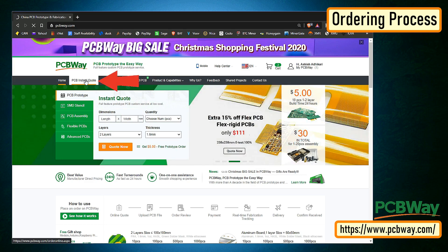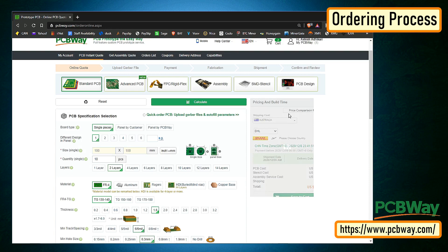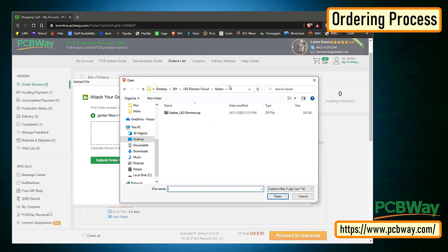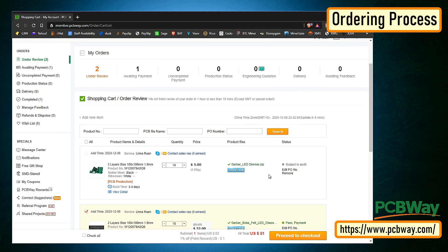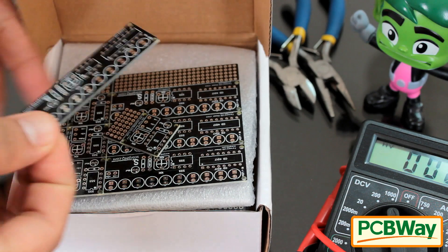Once I had my design ready, I just had to upload the Gerber file to the PCBWay's website and then select the type, color and any other customization that I want and then just send it for fabrication. For my project, I chose the black color. PCBWay ships from China to most of the countries of the world within 3 to 7 business days.